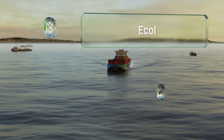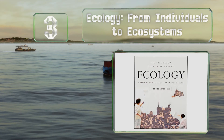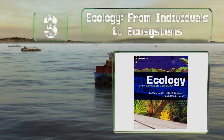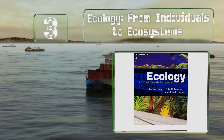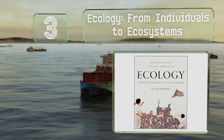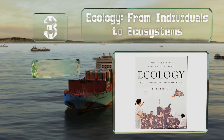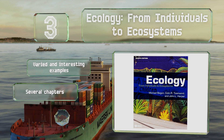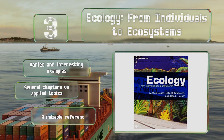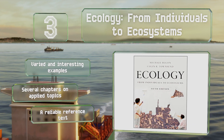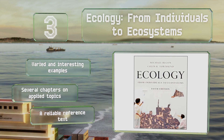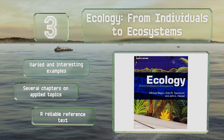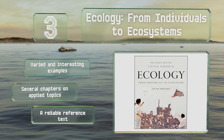Nearing the top of our list at number 3, aiming to do more than just teach the science behind the discipline, Ecology: From Individuals to Ecosystems uses data from over a thousand recent studies to address the many challenging environmental problems that ecologists must tackle in the near future. It includes varied and interesting examples and several chapters on applied topics, making it a reliable reference text.